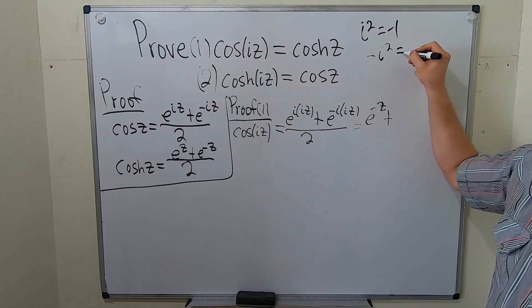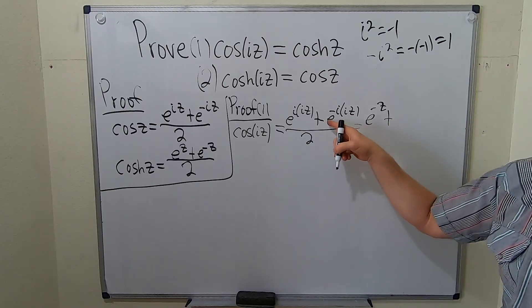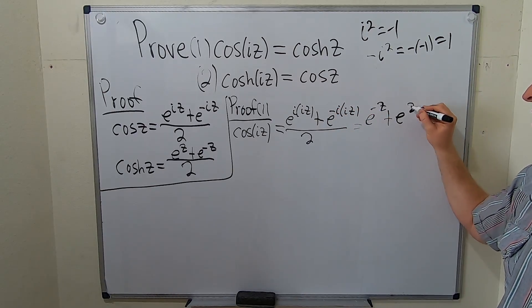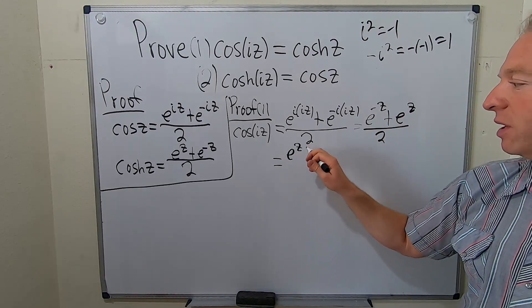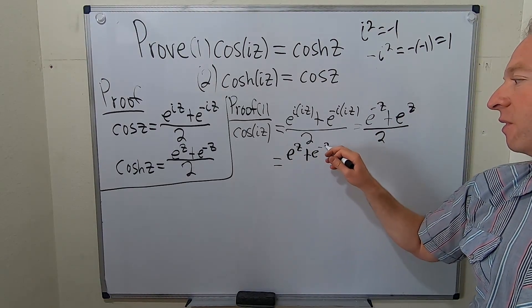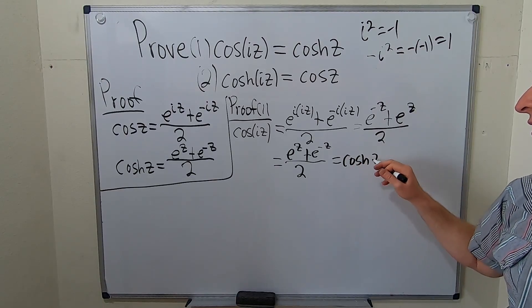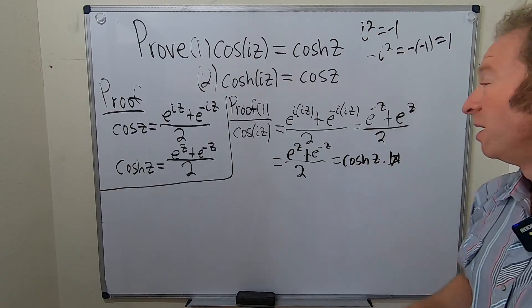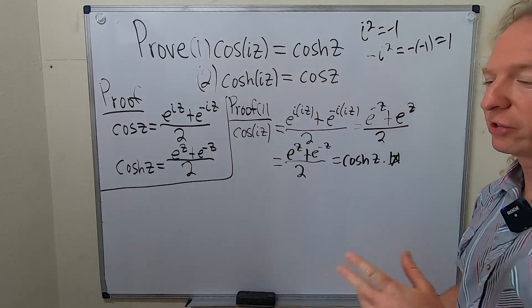So this is e to the negative z. This becomes e to the z and it's over 2. So let me rewrite this one more time. This is e to the z plus e to the negative z all over 2. And that's the hyperbolic cosine of z. Boom. Rush through it, but it's pretty easy. I think the one with sine and sinh is a little bit harder.